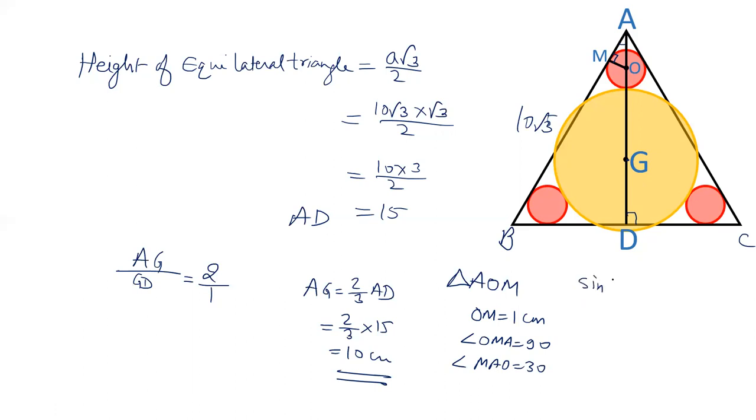Sine angle MAO: that will be equal to opposite side perpendicular upon hypotenuse. This angle is 30 degrees. OM is 1 centimeter. Sine 30 is 1/2. So the length of OA is 2 centimeter. From O to A is 2 centimeter.